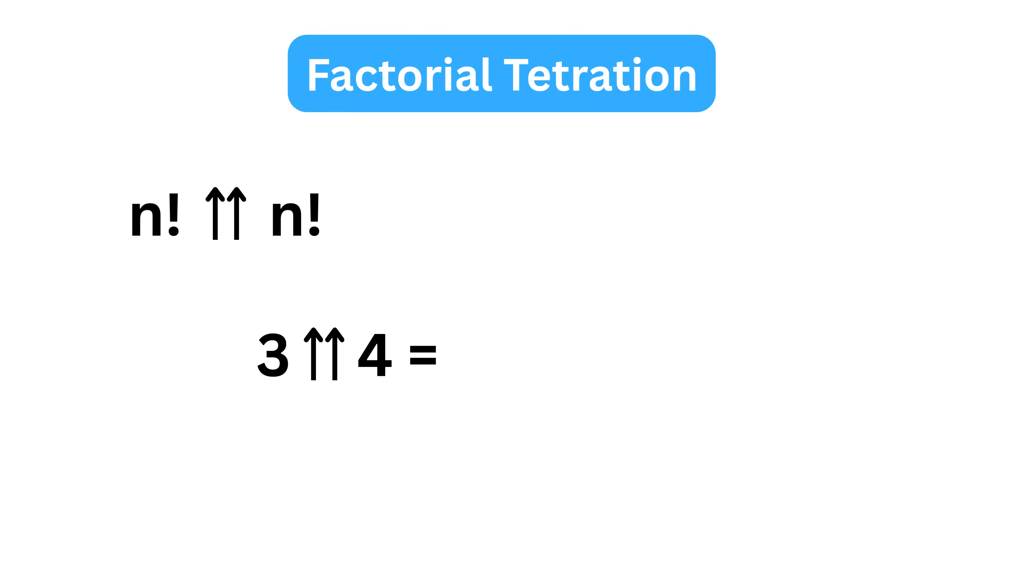For example, 3 tetration 4 means 3 raised to the power of 3 raised to the power of 3 raised to the power of 3, with 4 threes stacked like a tower.